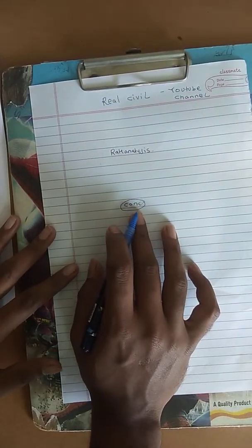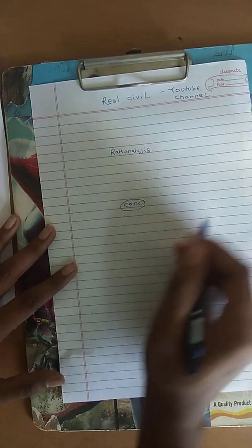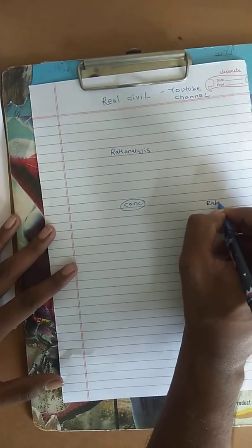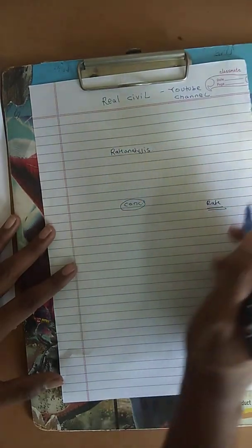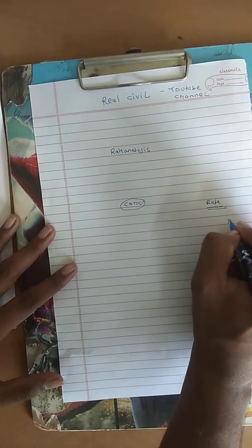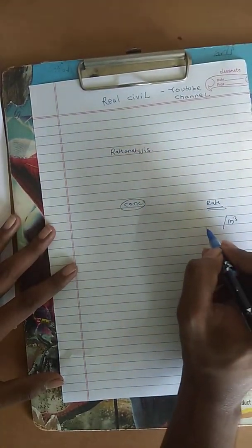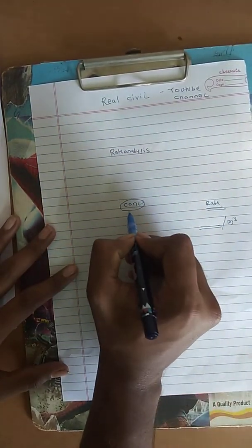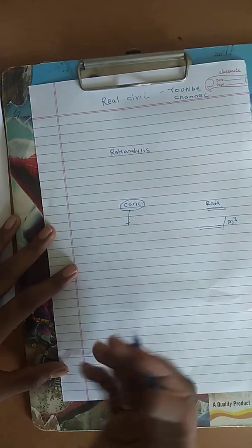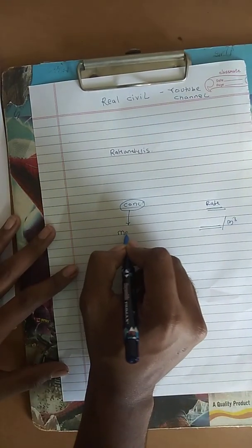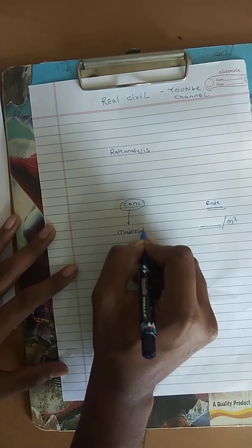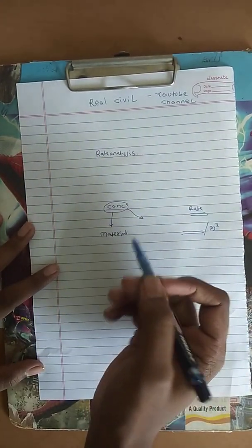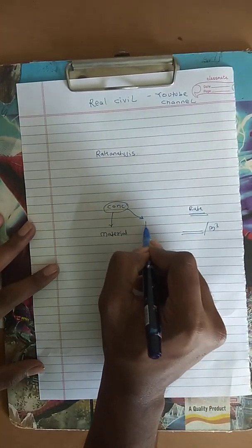Suppose we are doing the concreting work, so we will need its rate. We know the concreting is measured in meter cube, so rate per unit is required. For concreting, we will require some material like cement, sand, aggregate.